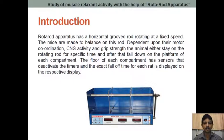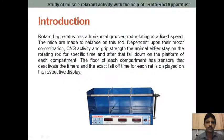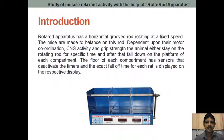This experiment is generally done to find the effect of a drug on the muscle coordination or motor coordination, CNS activity, and grip strength of the animal. What we are going to do here is keep the animal on the rotating shaft. The animal will maintain its balance, and in another group we are going to give the drug — for example, if the drug has CNS depression activity.